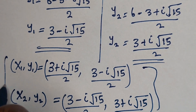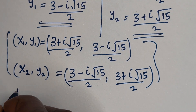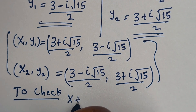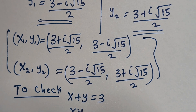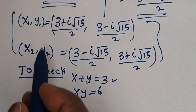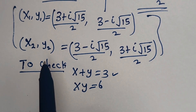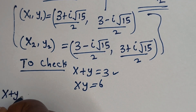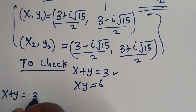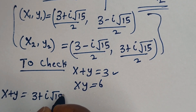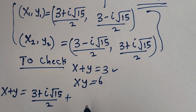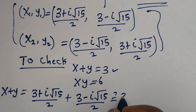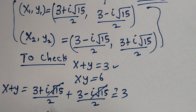These are the values of S and Y. We may check to confirm if this answer is right or wrong. To check, we have the given equations: S plus Y is equal to 3, and SY is equal to 6. Using S1 and Y1: S plus Y is equal to (3 plus i√15)/2 plus (3 minus i√15)/2, which must equal 3. The imaginary parts cancel, leaving (3 plus 3) over 2.